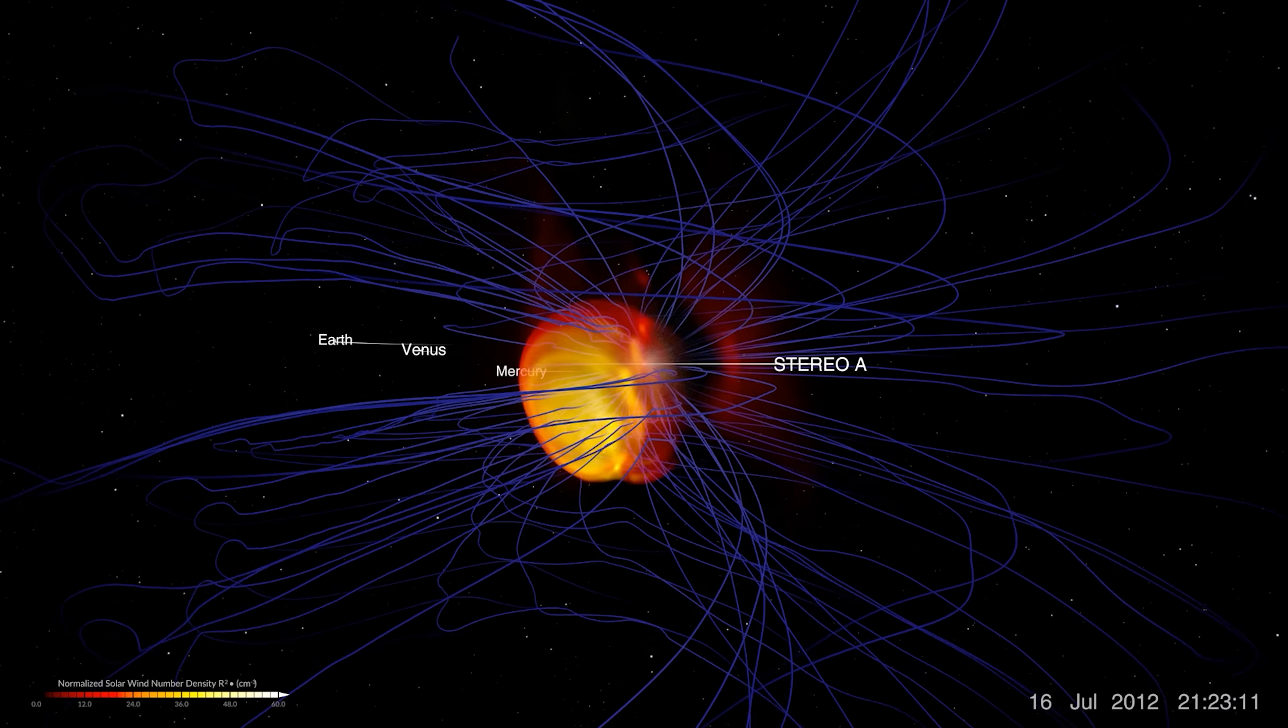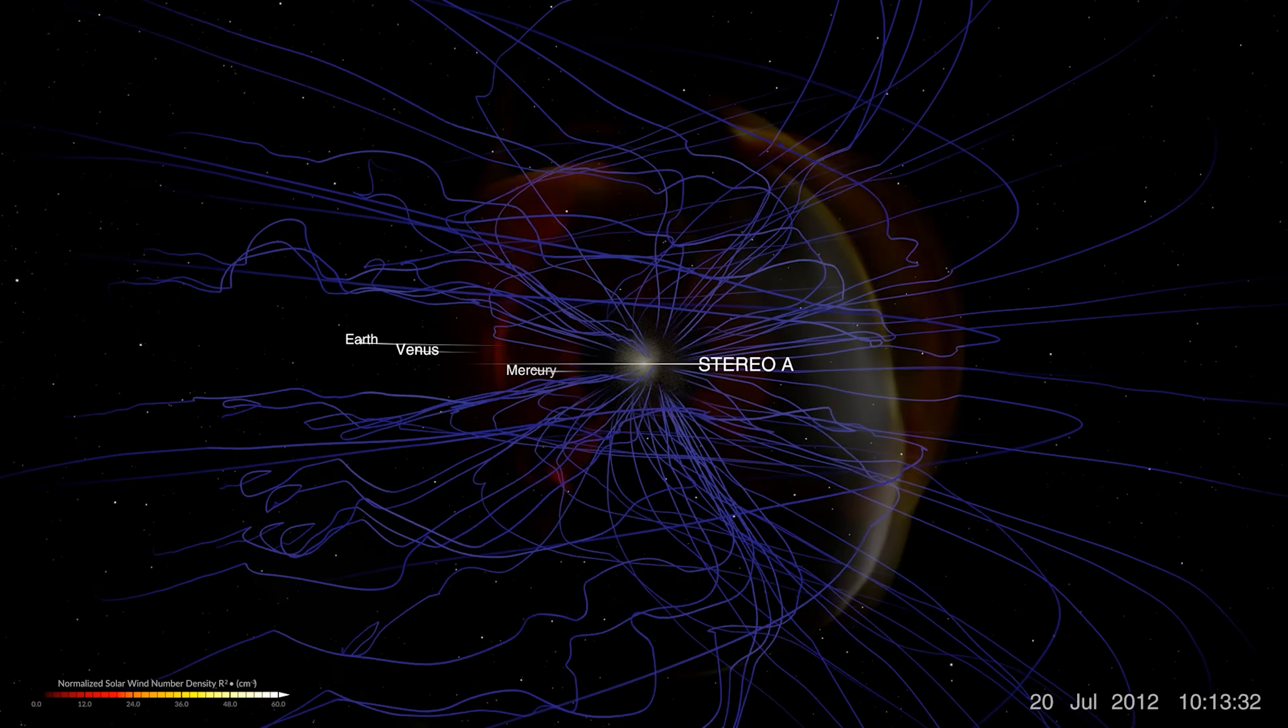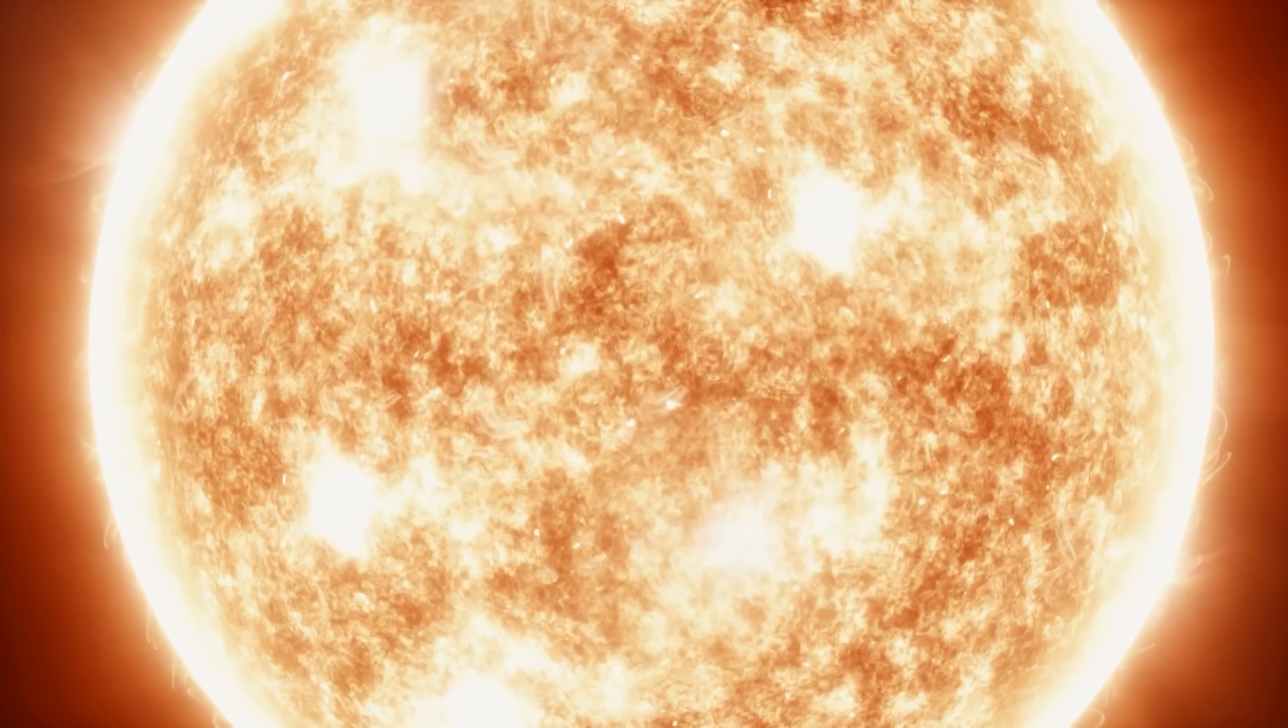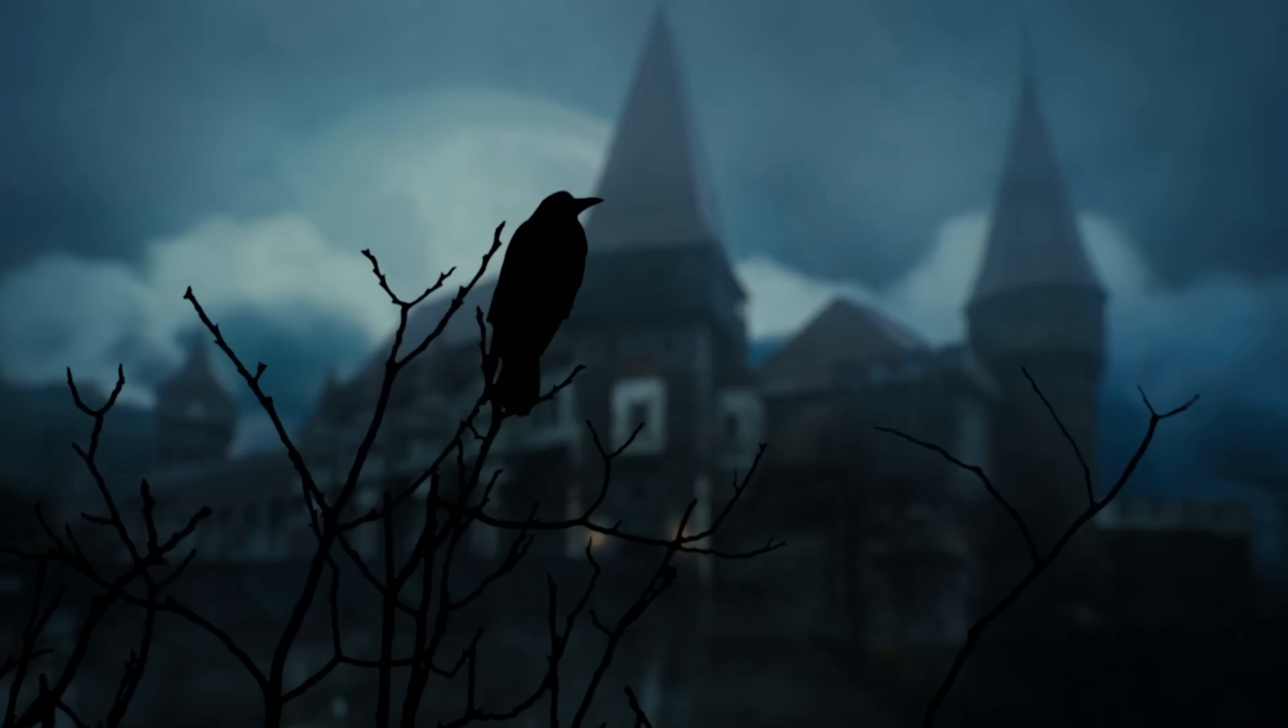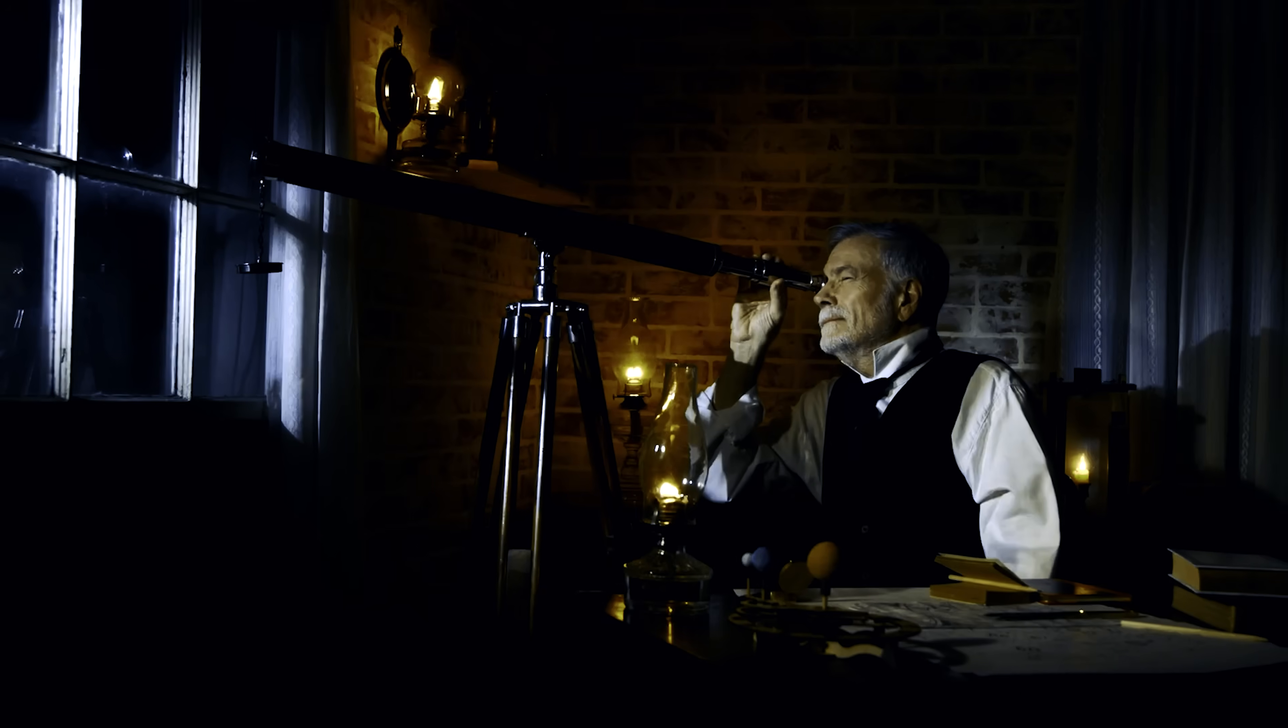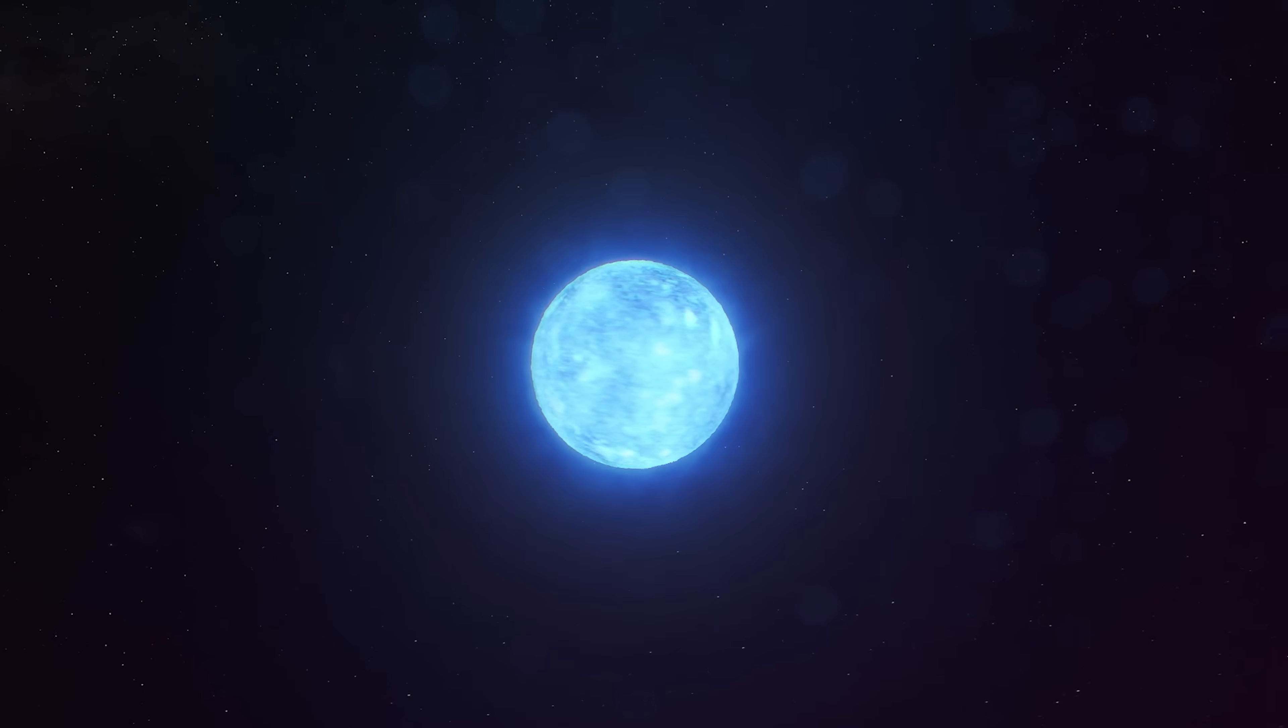The most intense geomagnetic storm on record took place on the night of September 1st, 1859, just a few months before the solar maximum of Sun Cycle 10. Amateur astronomer Richard Carrington was in Red Hill, United Kingdom, watching the Sun with fascination, counting and recording the number of sunspots he could see as they continued to grow.